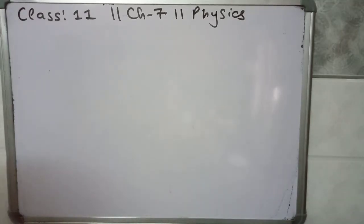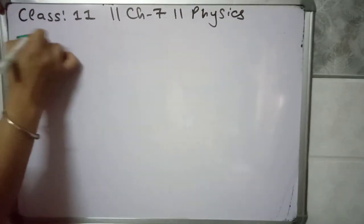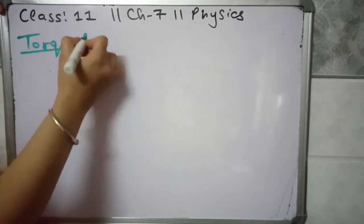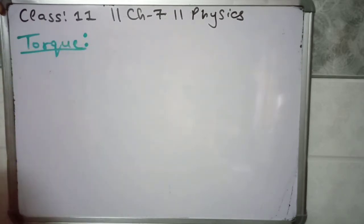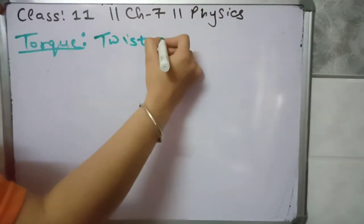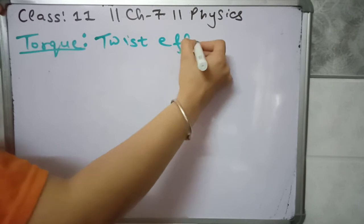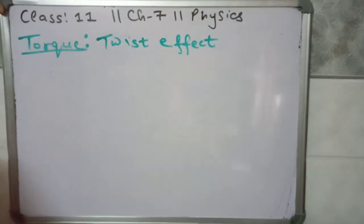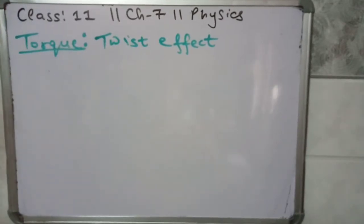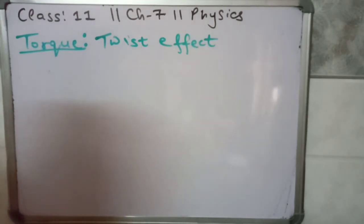Hello students, in this video we are going to continue our topic. Last class, last video, we talked about the twisting effect and force — the twisting effect. Now the question arises: how can you increase or decrease the twisting effect? Means, do you need more twist or turn, or less turn?